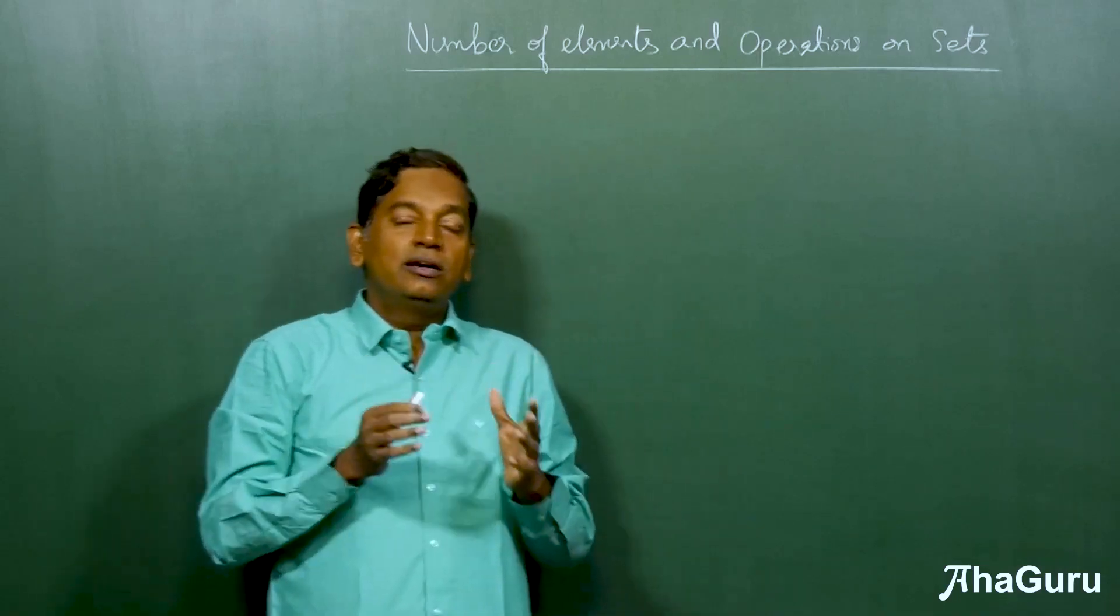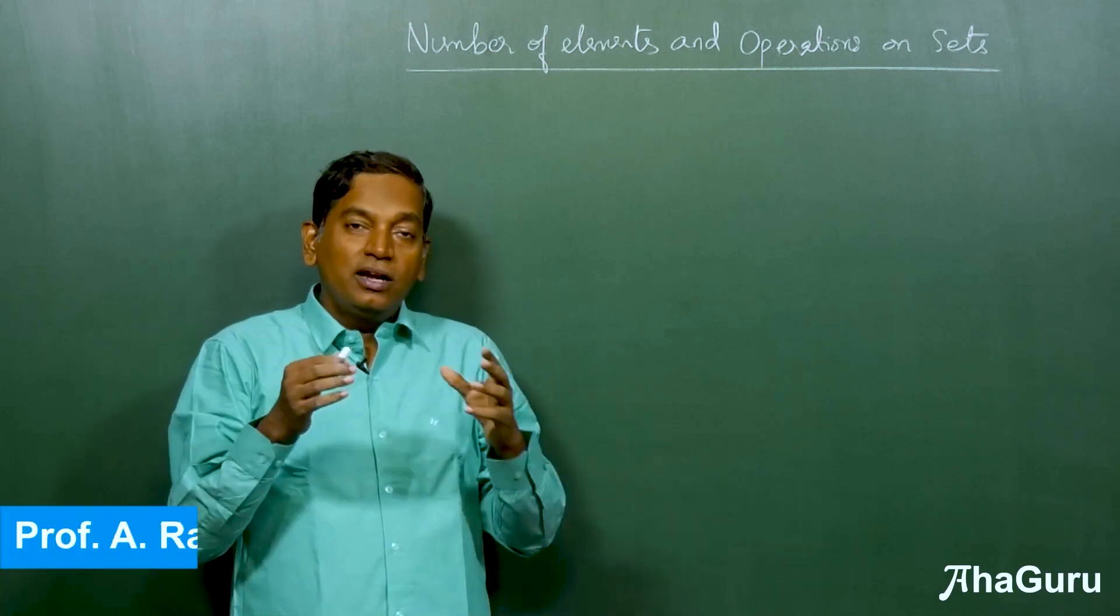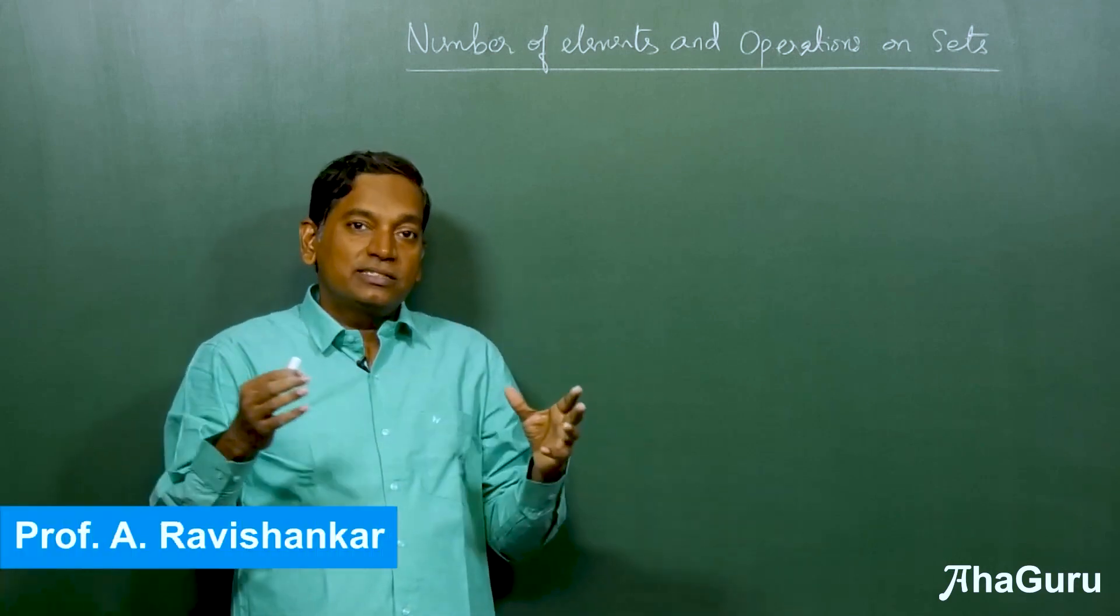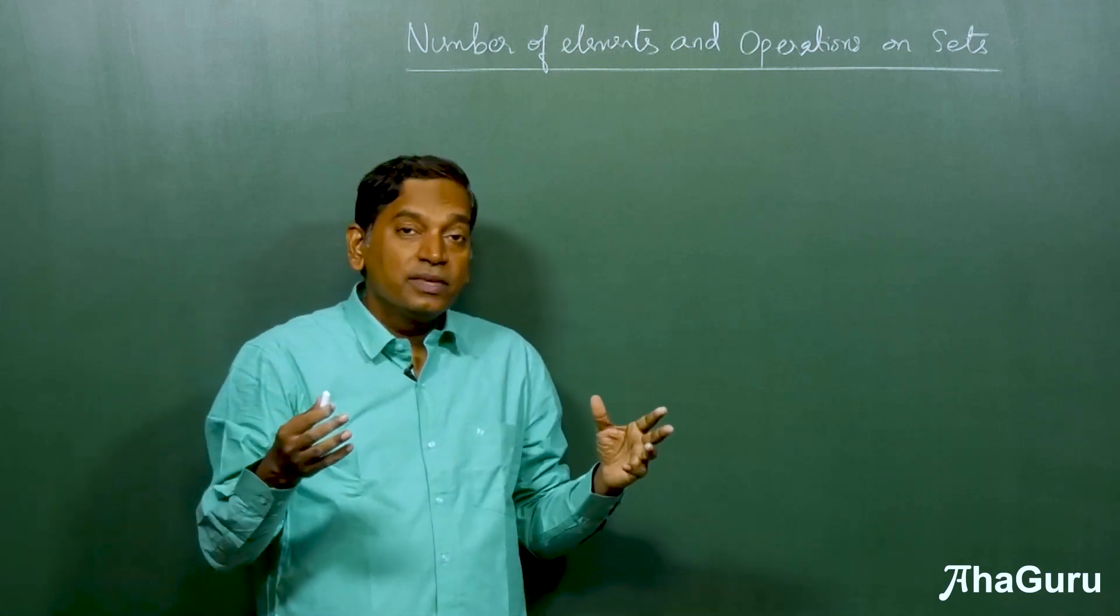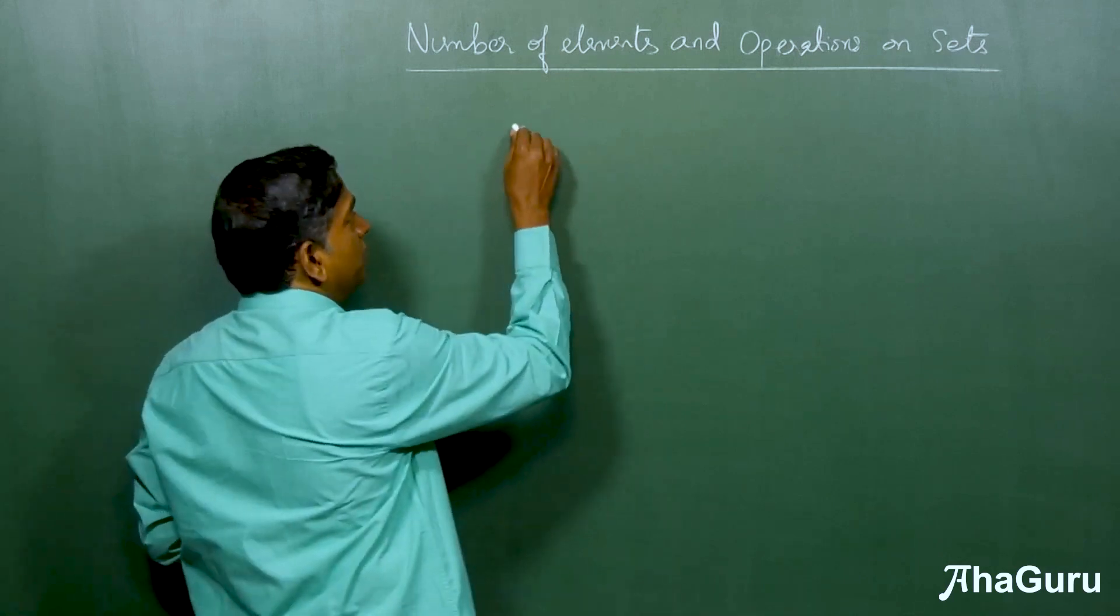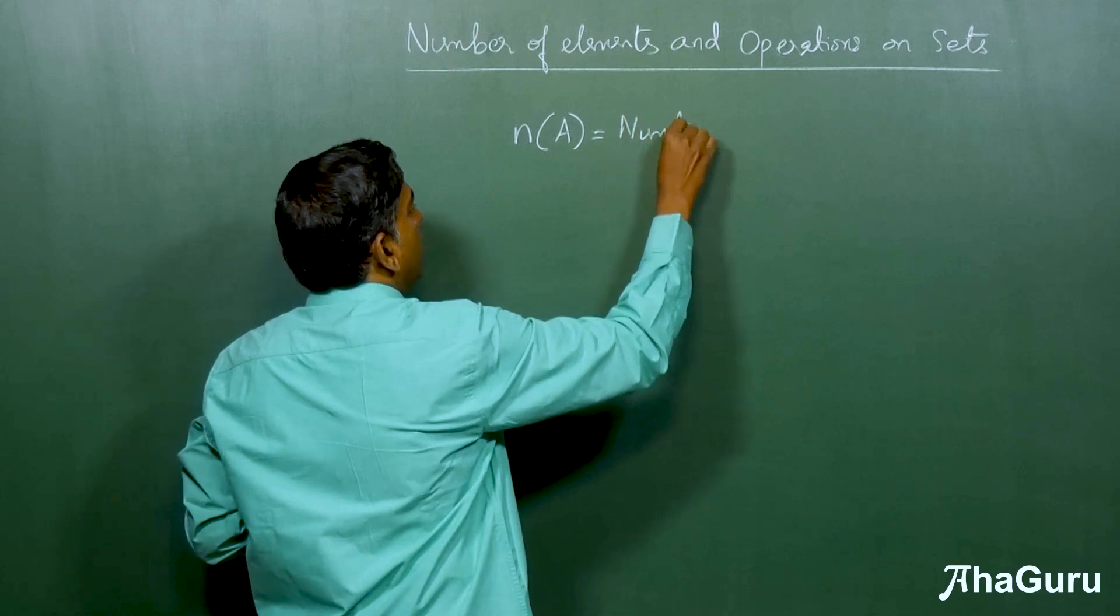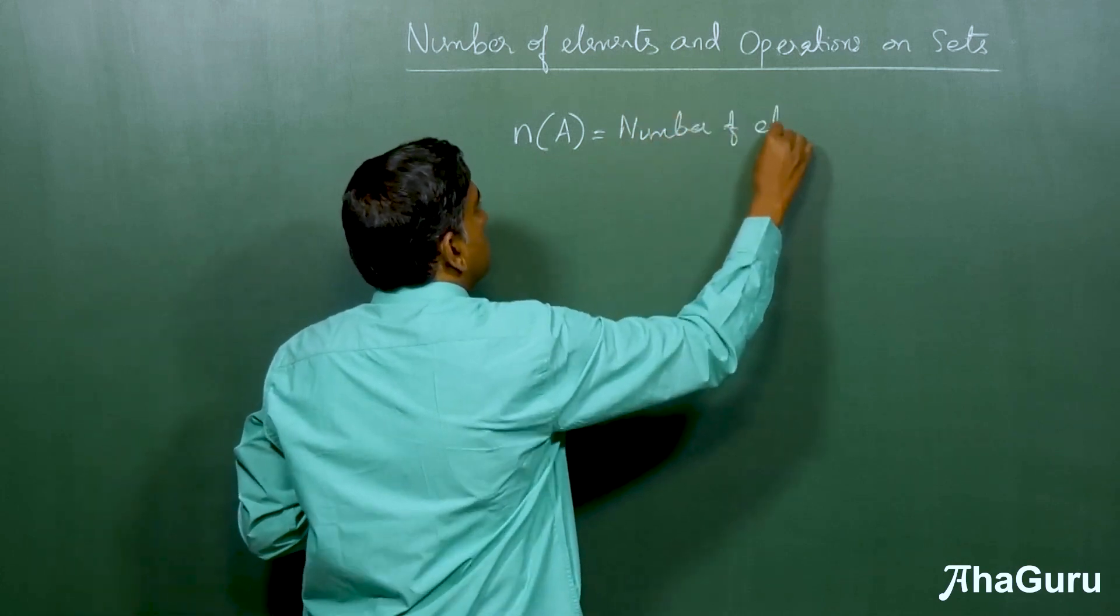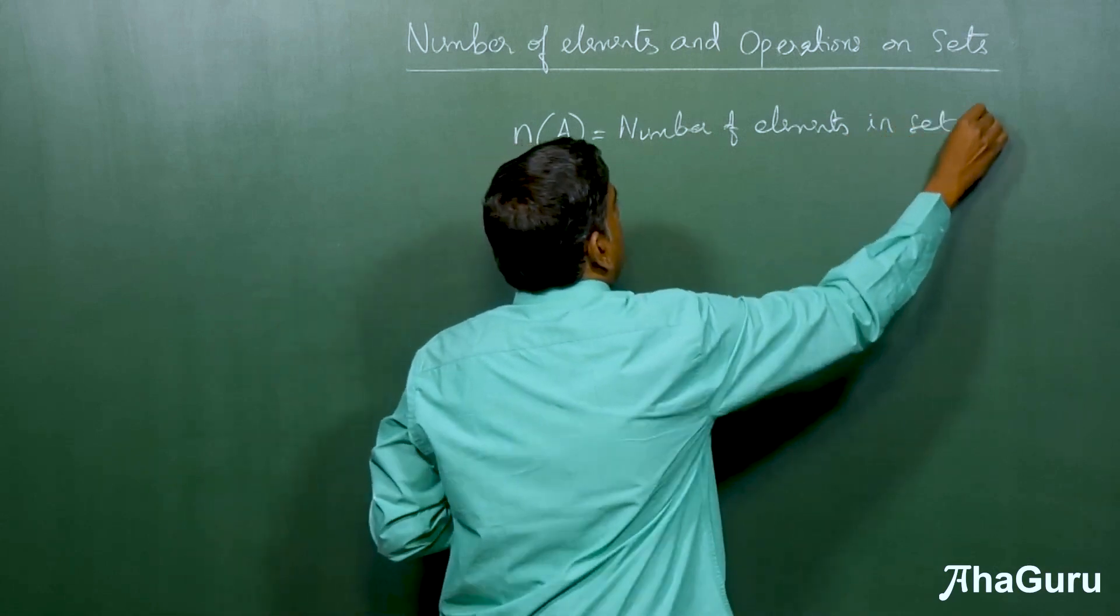Here we are going to learn about how to find number of elements on combinations of sets like A intersection B, A union B whole complement, etc. We already know what is number of elements of a set. n(A) is the number of elements in set A.